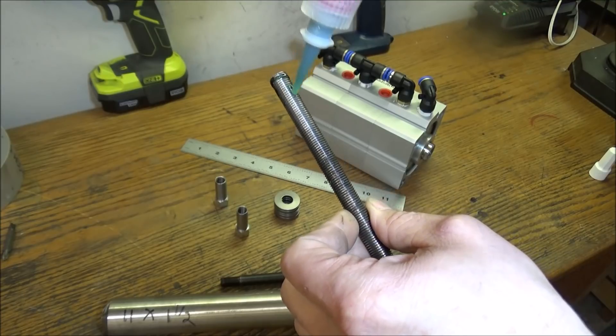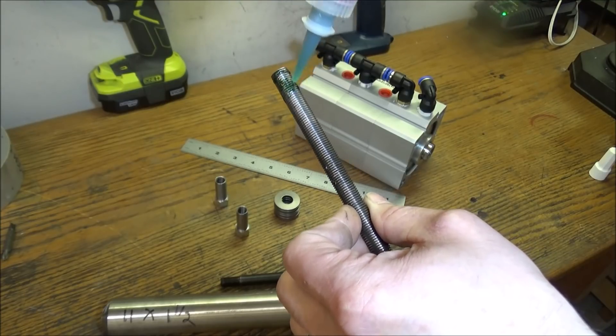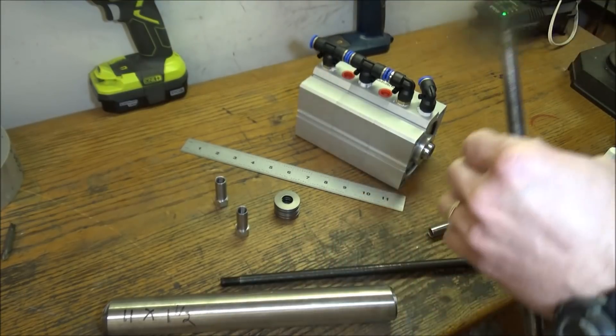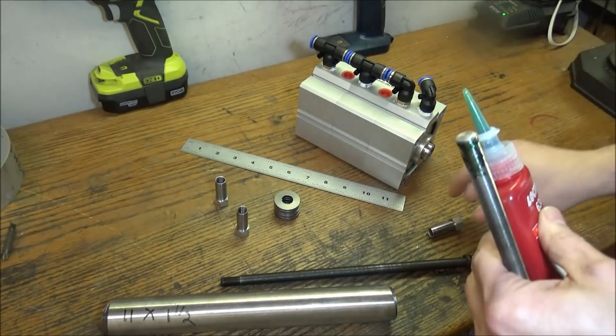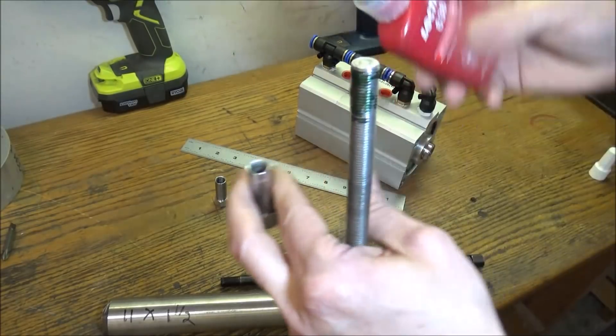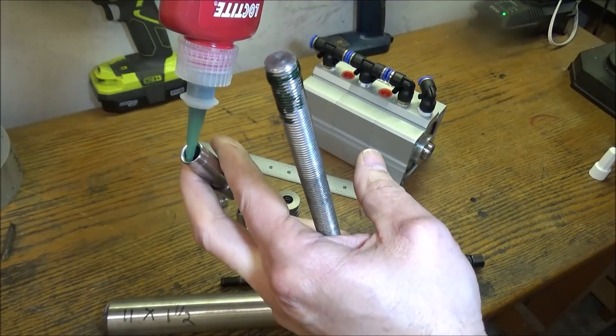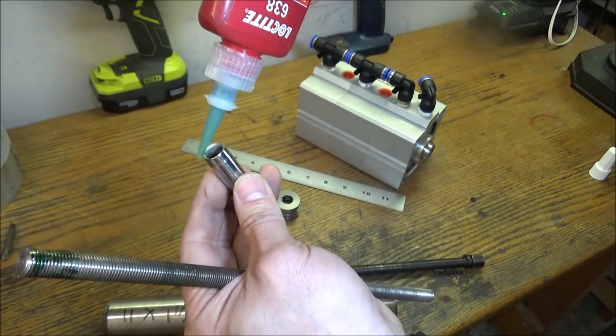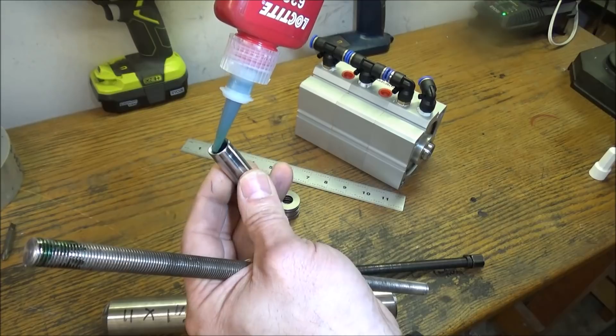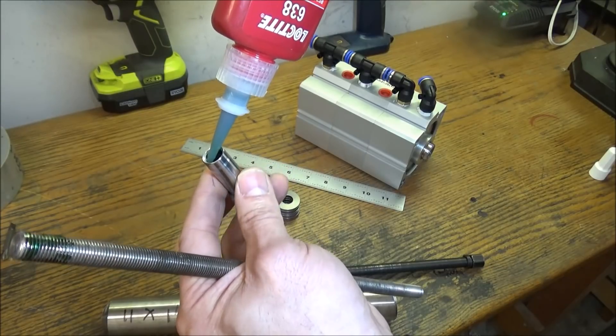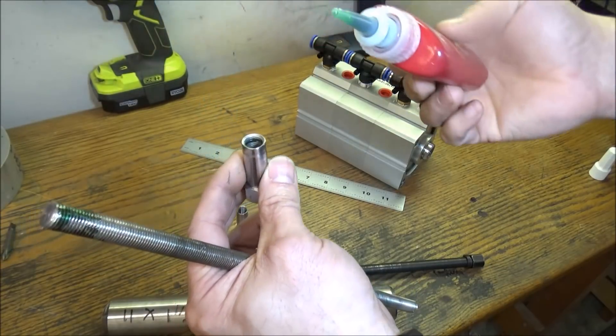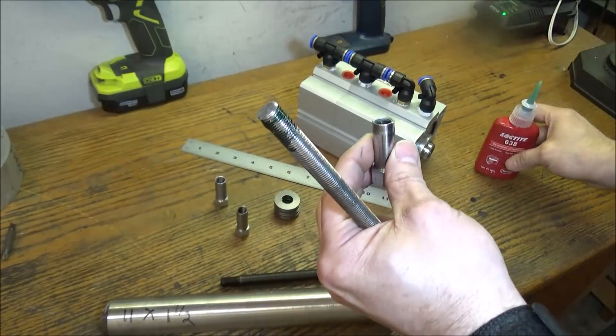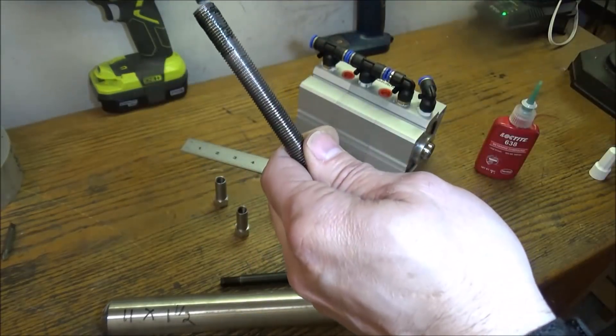It's pretty thick stuff. I'm going to be generous with this stuff because I don't want it to come off. Put a little bit on the rod, and I'll put a little bit in the start of these threads. Like so. Should be good. And then now we'll just screw this on.